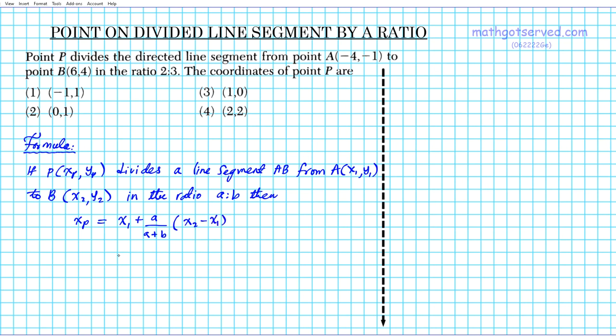And then the Y coordinate Y sub P is going to be Y sub 1, Y coordinate of the initial point A, plus A over A plus B times Y2 minus Y1. So all we're doing here is calculating what the vertical and horizontal displacement are from the first point using the ratio and splitting the distance using that ratio, and then adding that measure to the original point and that's what will give you your desired coordinates.